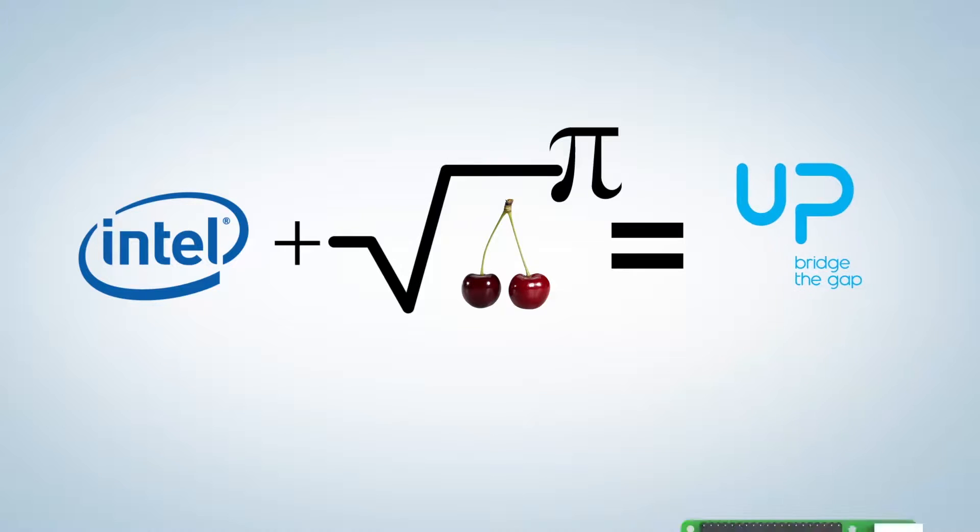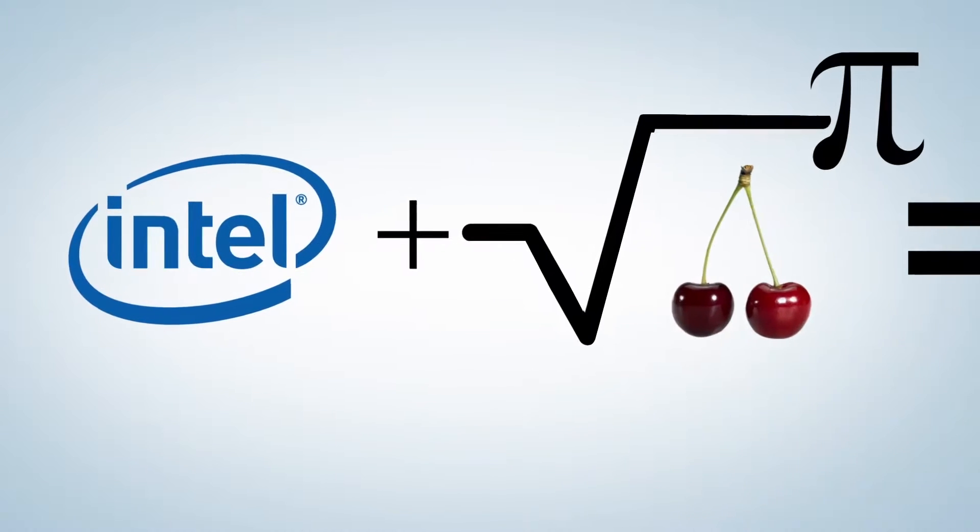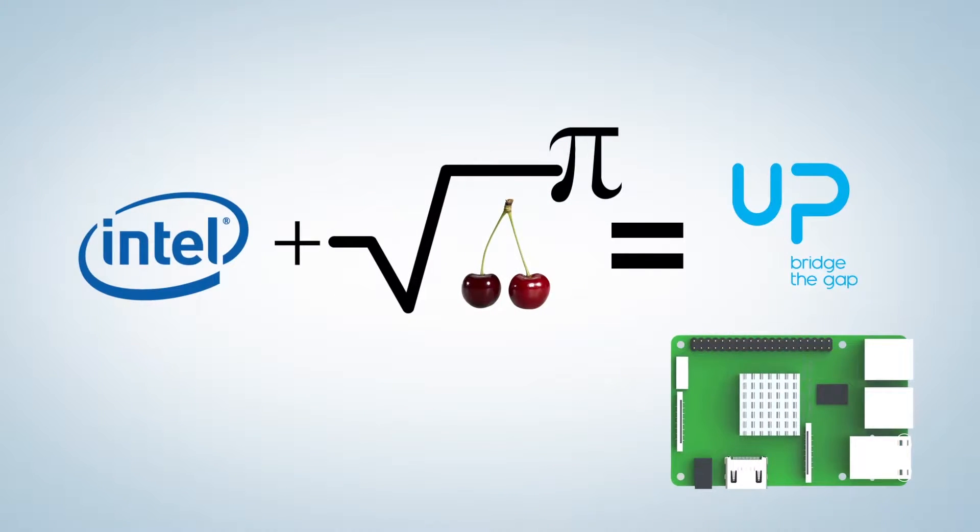Up is a credit card size board powered by Intel Cherry Trail Atom Quad Core X5-Z8300 that delivers extremely high performance in only 2 watts.